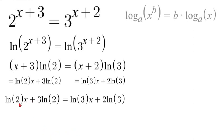Now what we want to do is we want to have our x's on the same side. So the first thing we're going to do is we're going to subtract 3 natural log of 2 from the left side. So we subtract both sides, these would cancel, and we'd be left with natural log of 2x is equal to natural log of 3x plus 2 natural log of 3 minus 3 natural log of 2.